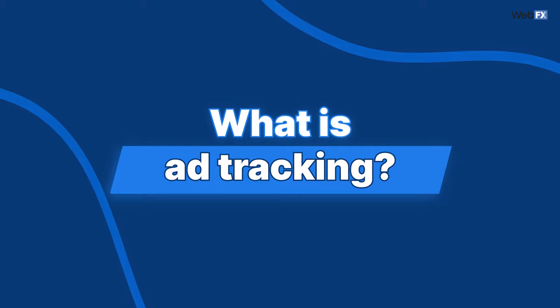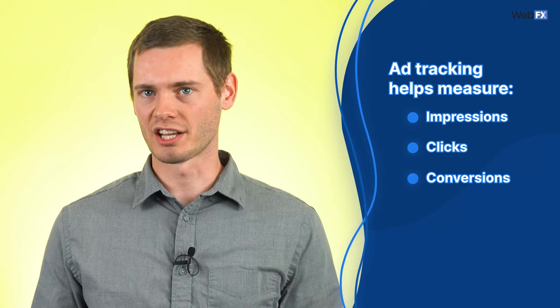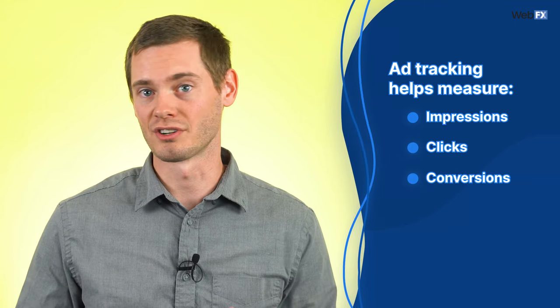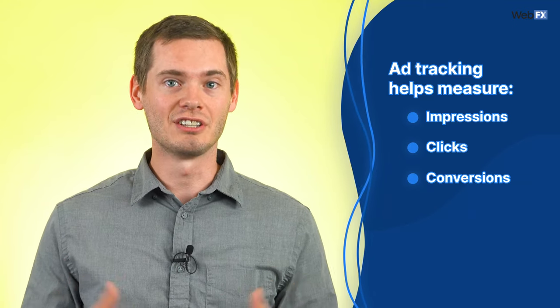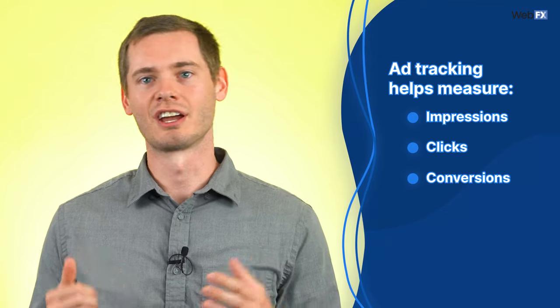What is ad tracking? In its simplest form, ad tracking means gathering information about how people are interacting with your digital ads. With tracking in place, you can measure things like impressions, or how many times people see your ads, clicks, and conversions.